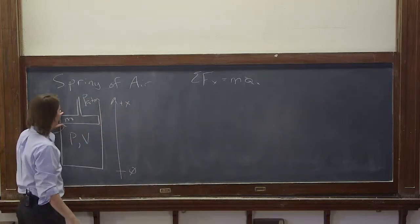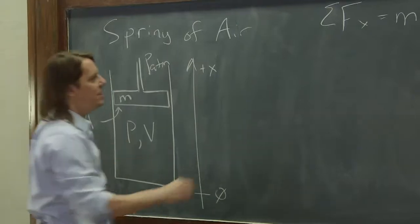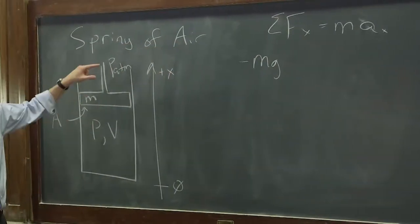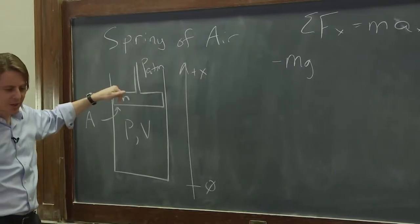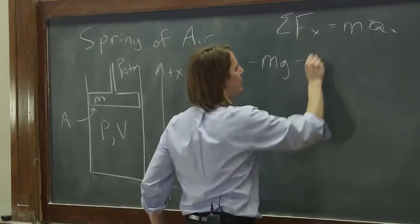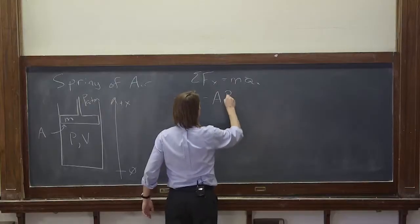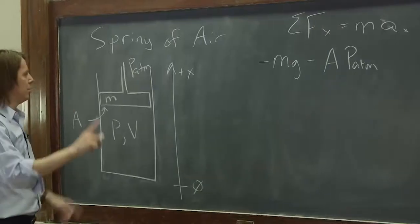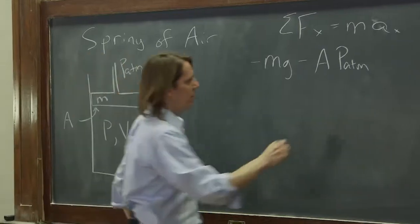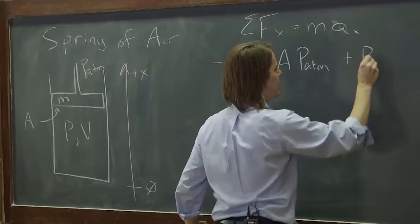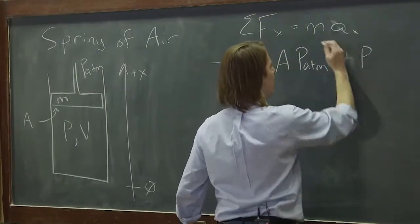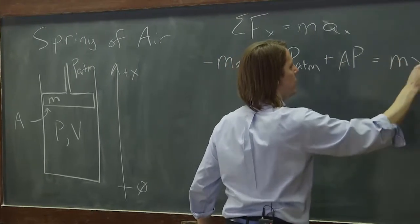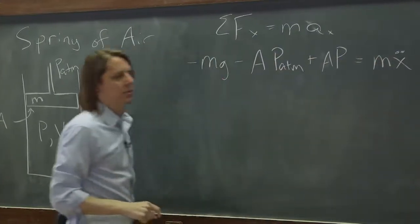What are all the forces in the x-axis? There's minus mg, the thing has weight. There's the atmospheric pressure pushing down, minus area times atmospheric pressure. And then there's the pressure pushing up. P in here can change. So plus P times the area. Those together equal m x double dot.